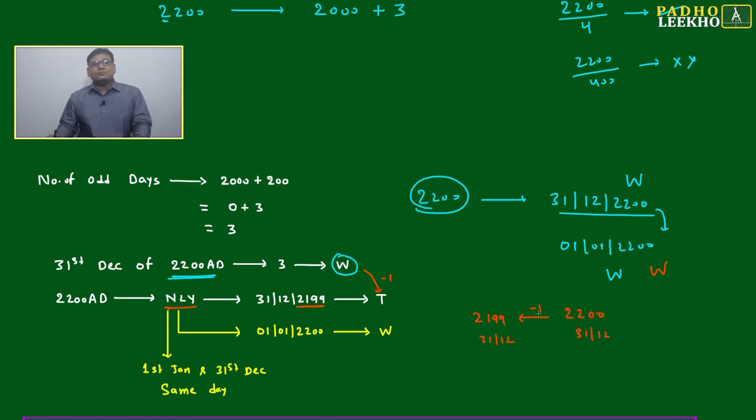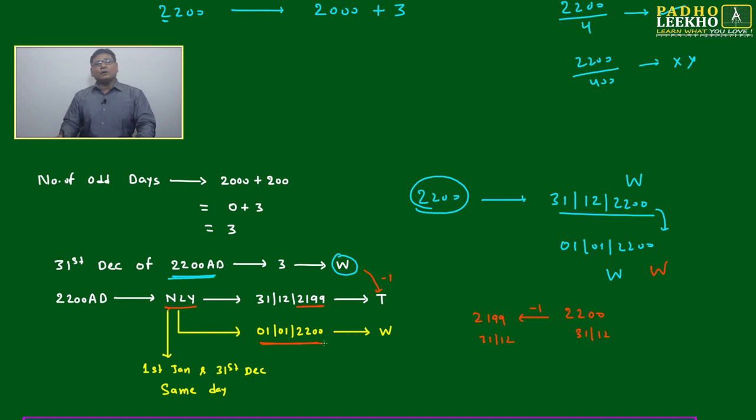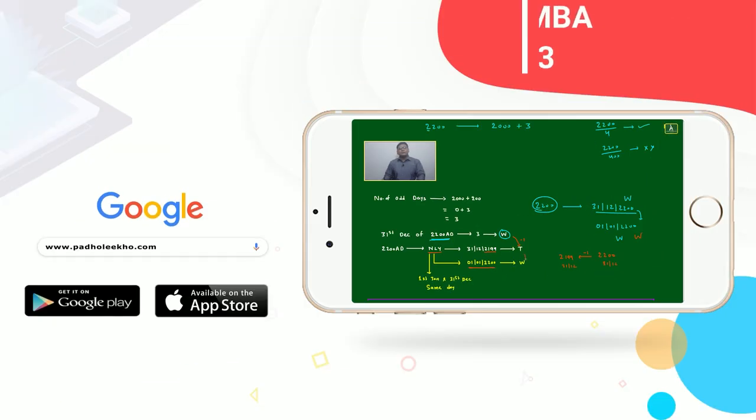It will be minus one. It was Wednesday minus one, it will come Tuesday. If 31st December 2199 was Tuesday, the next date will be first January of 2200. It will be next day, it will be Wednesday.